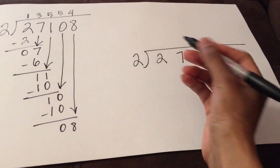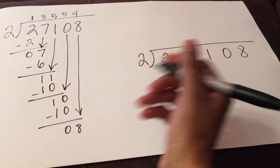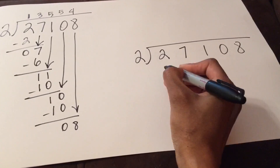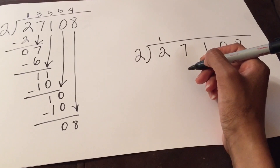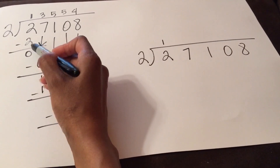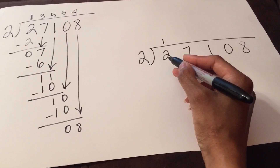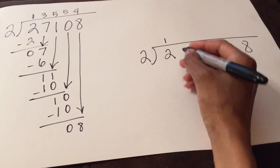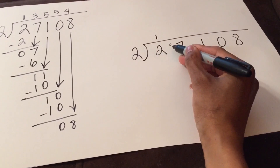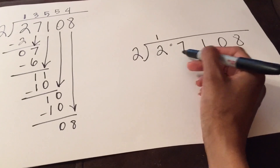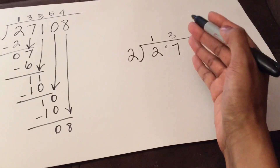We are basically going to simplify the subtraction step. Over here, two goes into two one time. Now what I'm going to do is keep the answer to that in my head. So instead of writing down two, I think: the answer was two, and when I subtract two from two I get zero. So I put a zero right here in front of my seven. Now I'm asking myself how many times does two go into zero-seven, or just plain oh-seven.